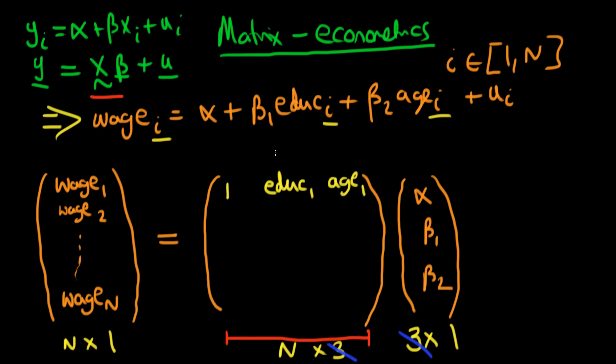Why is that? Well, the idea is that if I was to do matrix multiplication with this first row, then this 1 would be multiplying this alpha, the education level would be multiplying beta 1, and then the age would be multiplying beta 2. So actually I've just replicated this above relationship here, but instead of using index i, I'm just saying this must hold for individual 1.